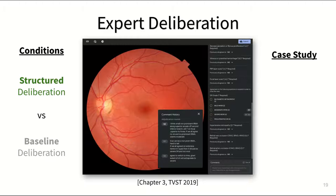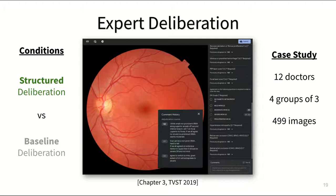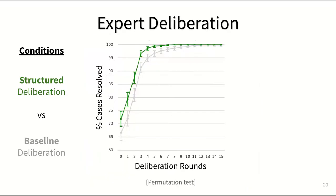With this setup, we ran a between-subjects experiment with 12 doctors, forming four groups of three doctors each, and each of the four doctor groups labeled and discussed the same set of roughly 500 images. Two of the groups followed the structured approach, whereas the other two groups used the baseline approach.